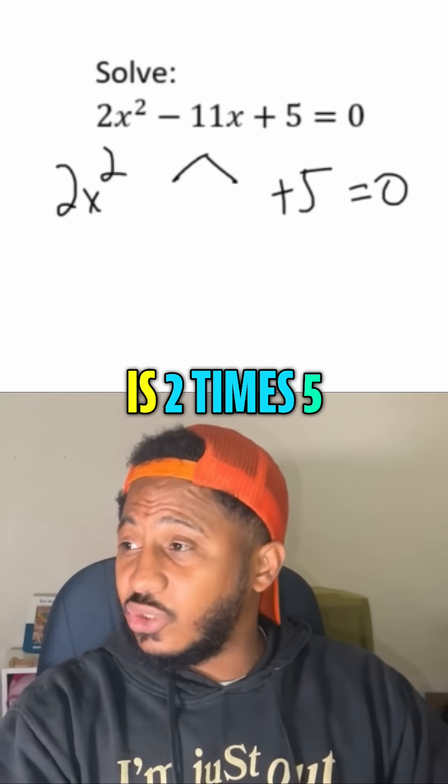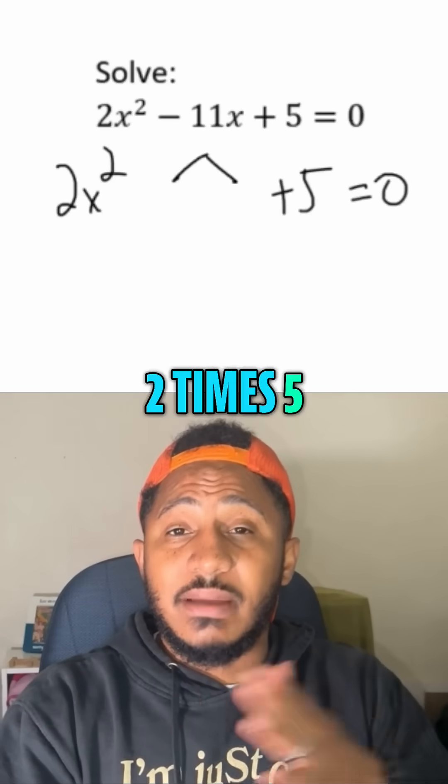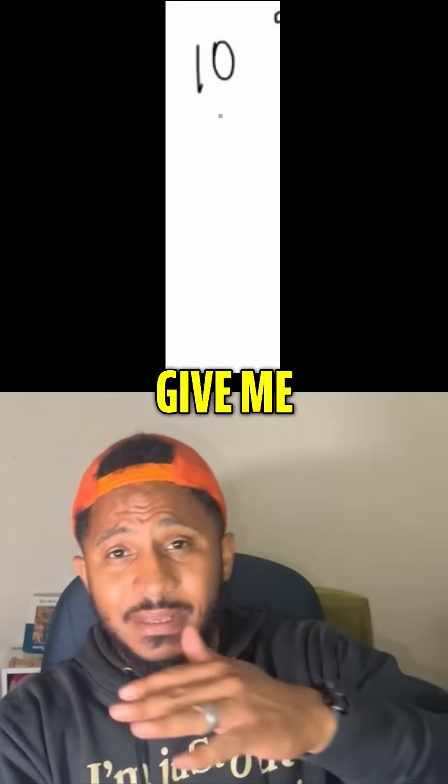So A times C here is two times five. So two times five gives us 10, okay, got it. So I need numbers that multiply to give me 10, and combine to give me that negative 11.